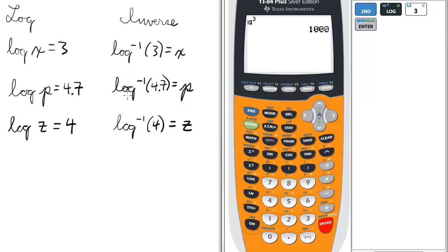So the inverse log of 4.7 equals p. We repeat the process, so we press 2nd and log, and then enter the number 4.7. So the inverse log of 4.7 is 50,118.72336.